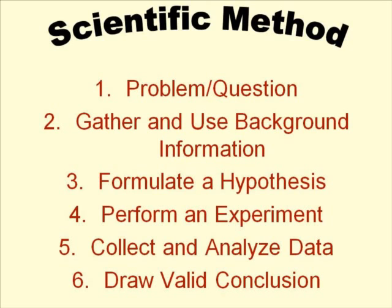Here are the steps of the scientific method. Number one: identify a problem or question. Number two: gather and use background information. Number three: formulate a hypothesis — something based on background information, not just a guess. Number four: perform an experiment to test your hypothesis. Number five: collect and analyze data. Many books combine steps four and five because when you're performing an experiment, you are also simultaneously collecting and analyzing data. And the last step is to draw a valid conclusion based on your data and experiment.